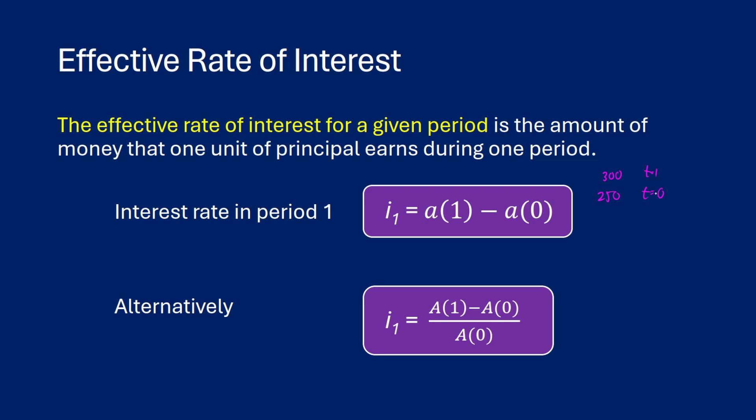Now, alternatively, we can do this in terms of amount rates. So it's the amount at time one minus the amount at time zero, and we're going to be dividing by the amount at time zero. So this is basically reducing to a ratio out of one. So the amount function is scaling your accumulation function. So we need to divide by the amount function basically to scale it backwards.